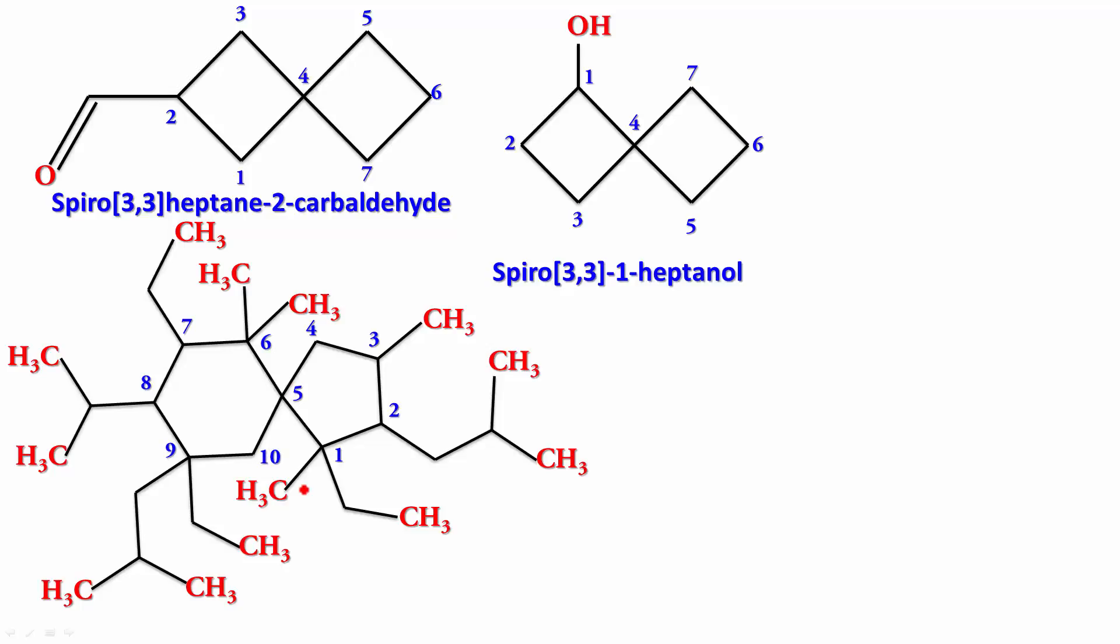And the smaller ring and then you have a lot of substituents. This is one. So, one, two, three, four, five, six, seven, eight, nine, ten. And now, first write the name of the parent, which is spiro. So, one, two, three, four, four, five, four, five, four, five, decane. Spiro[4.5]decane.